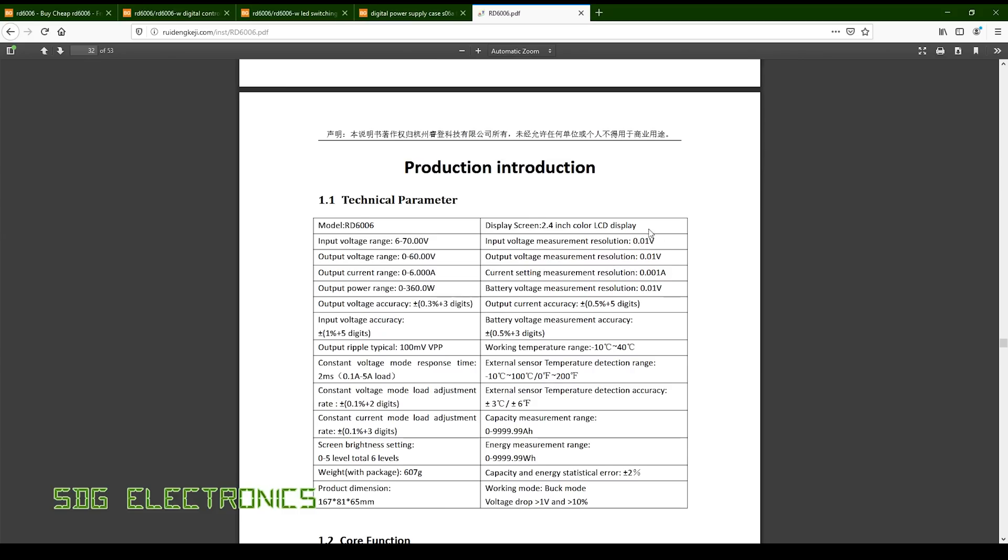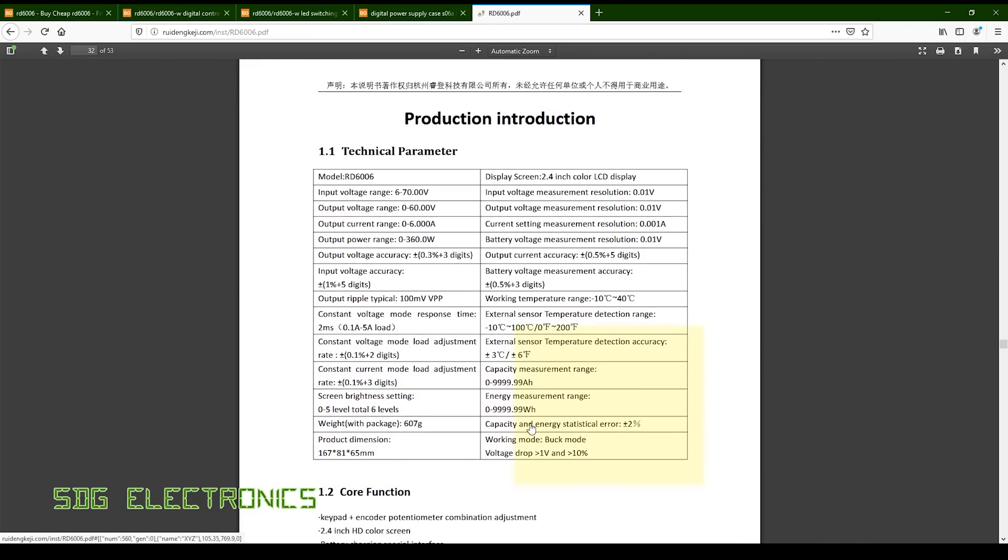Most of the digital readouts have at least two decimal places. It's got three decimal places for the current, and the accuracy is 0.5% plus five digits, so that's pretty good. It's got a few extra features that you don't normally get on power supplies: capacity and energy measurement.